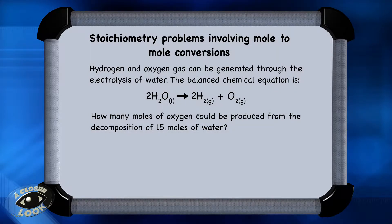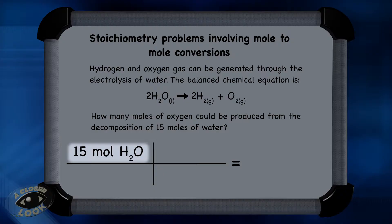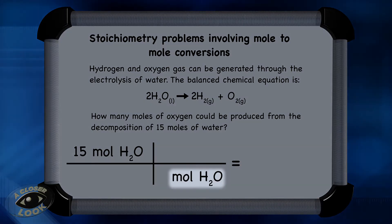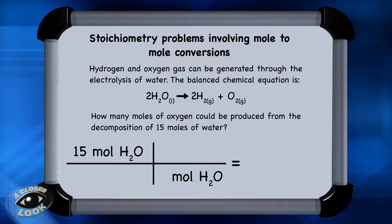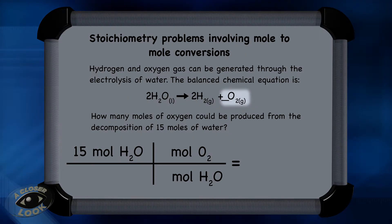To start the problem, take what's given and put it in the upper left-hand corner of the conversion chart. In this one, there are 15 moles of water given as the starting point. The question asks how many moles of oxygen can be produced from the decomposition of those 15 moles of water. So bring the units down — in this case the moles of water — and use the mole ratio from the balanced equation to convert from moles of water to moles of oxygen. Notice there's a 2 in front of the water.